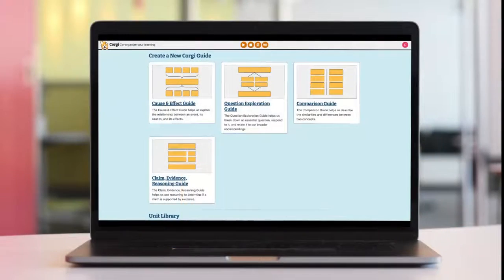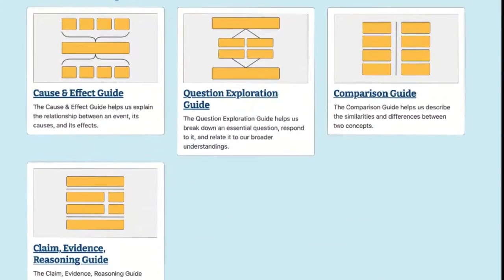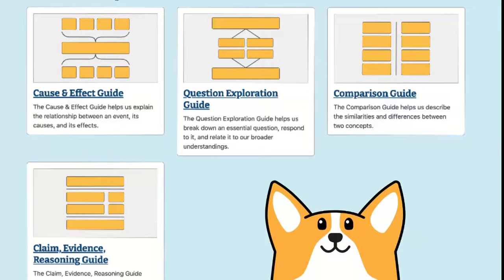The Corgi application includes guides for developing the critical skills of comparison, cause and effect, and claim evidence reasoning. And it's growing.